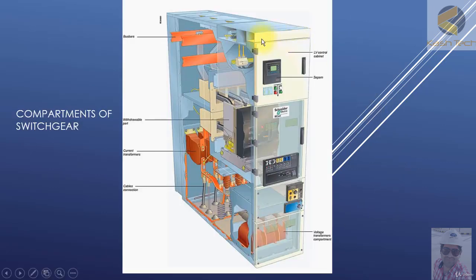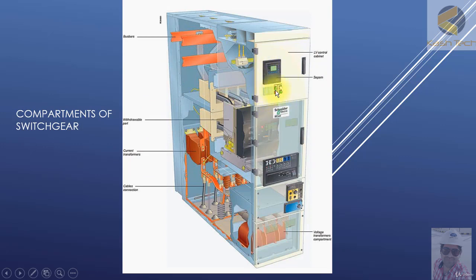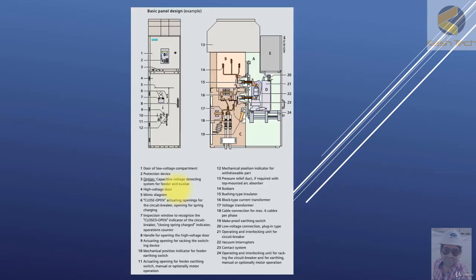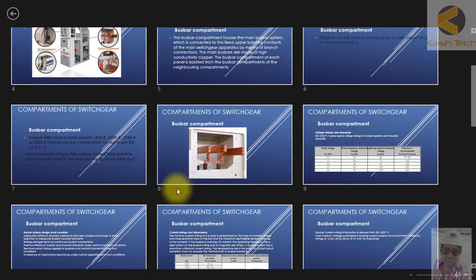Then we will discuss a nice 3D graphics compartment cutout, and I will be explaining in detail the functionality of each item. These are the bus bars, this is the trolley, this is the LV compartment, these are the test plugs, and this is the mimic. I will be explaining everything in detail.